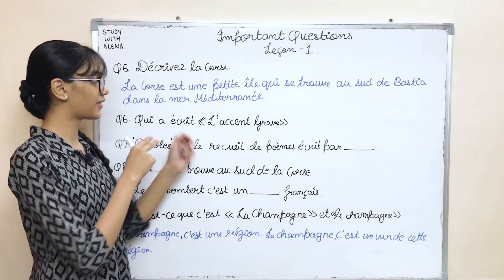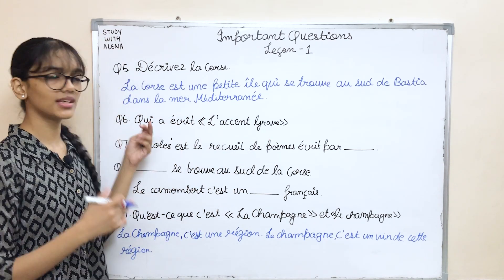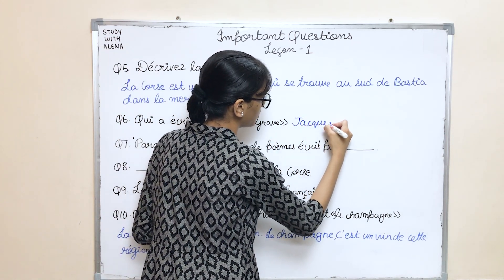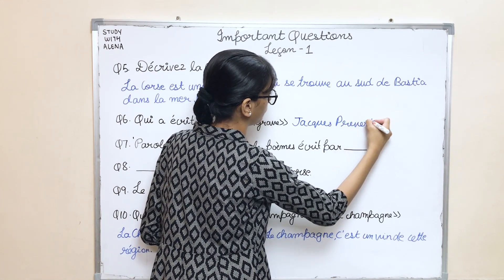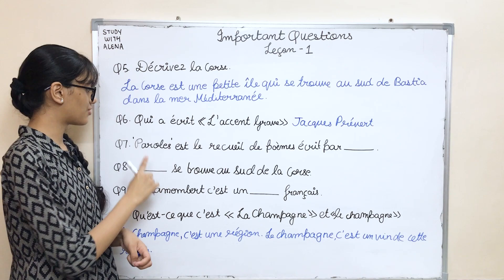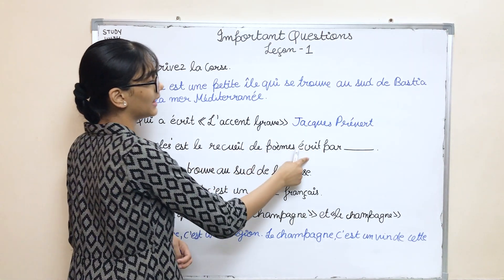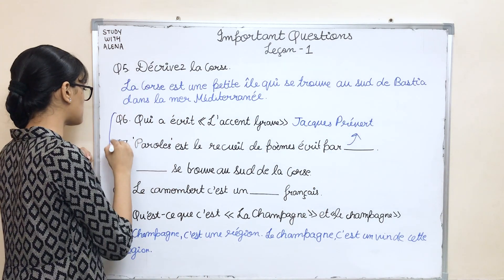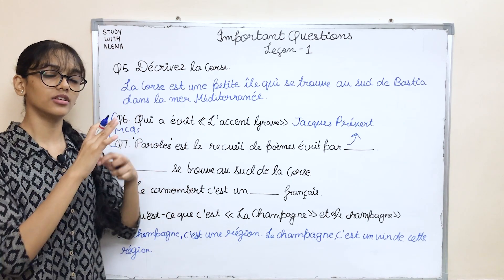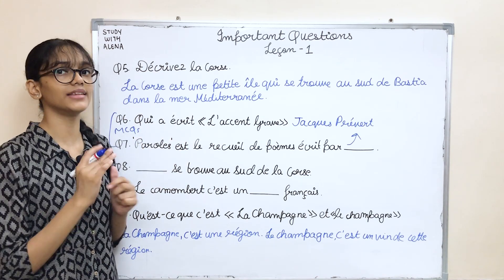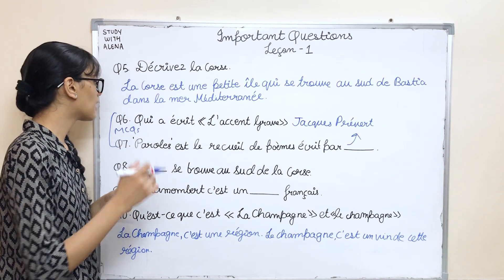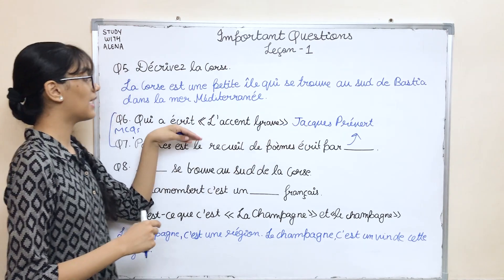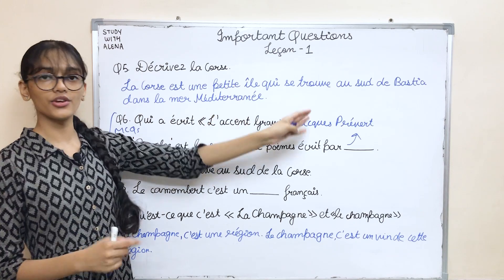Next question: 'Qui a écrit L'Accent Grave?' This will mostly come as an MCQ. The answer is Jacques Prévert. The seventh question asks about the paroles et lyriques de poème — also written by Jacques Prévert. Both will come as MCQs. Paroles is the collection of poems written by Jacques Prévert, and L'Accent Grave is also a poem written by Jacques Prévert.